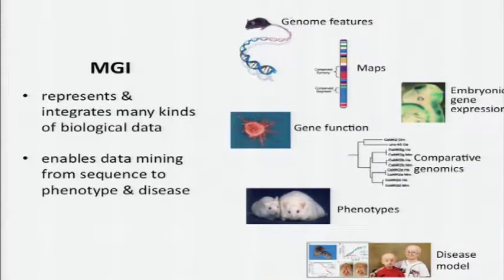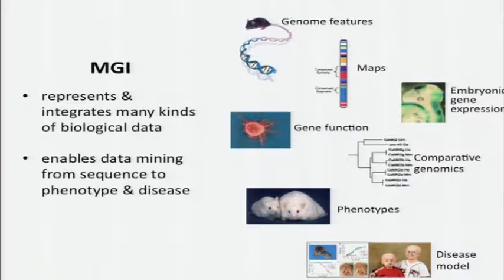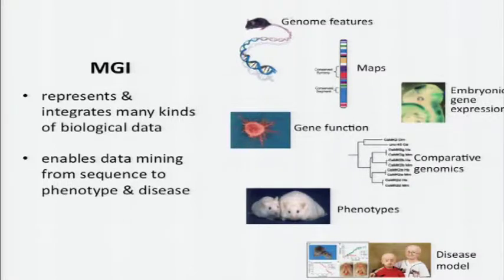MGI represents and integrates a lot of different kinds of biological data. The genome features that are based on the mouse genome assembly, various kinds of maps — both genetic and genomic — embryonic gene expression patterns, gene function instantiated as GO, comparative genomics including both mammalian orthologs and homologs as well as zebrafish and chicken recently added, and phenotypes of mutations that have occurred in the mouse — of which there are hundreds of thousands — and disease models.